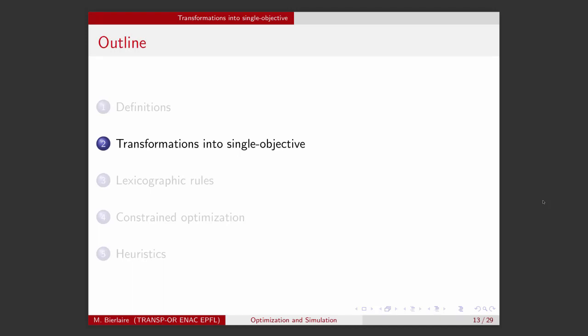Now, how to solve these problems, now that we have defined the concept of optimality? Well, the first idea is to come back to something we know, meaning optimizing a single objective. So let's investigate first how to modify or to transform a multi-objective optimization problem into a single objective one.